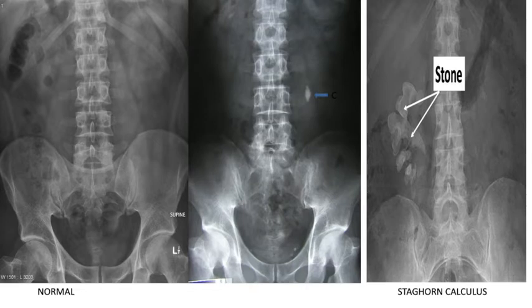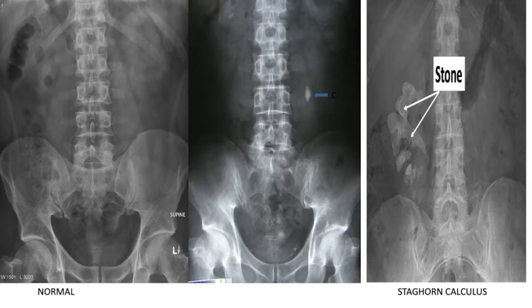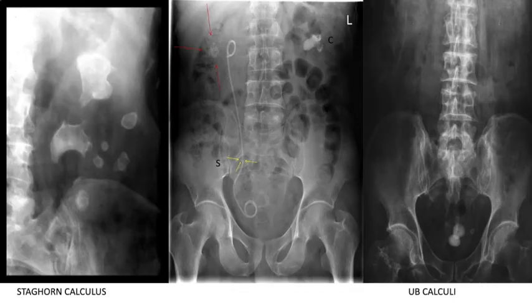Here are examples of KUB. On your left is a normal KUB; on your right you can see a stone, which is marked with an arrow — it is already a stone in the kidney. This is another staghorn calculus occupying the whole collecting system — it is a complete staghorn calculus. This other staghorn calculus is incomplete — there is no fusion between the calyces and the pelvis.